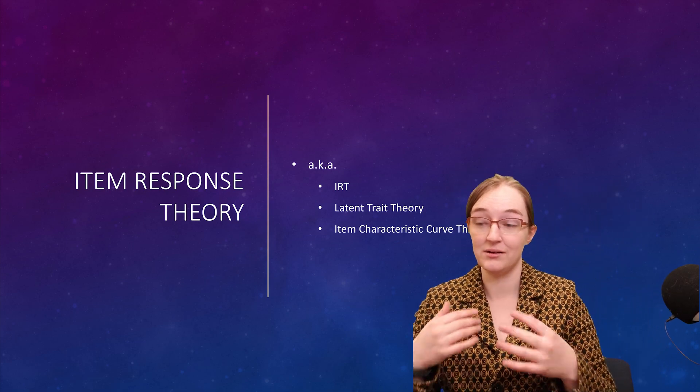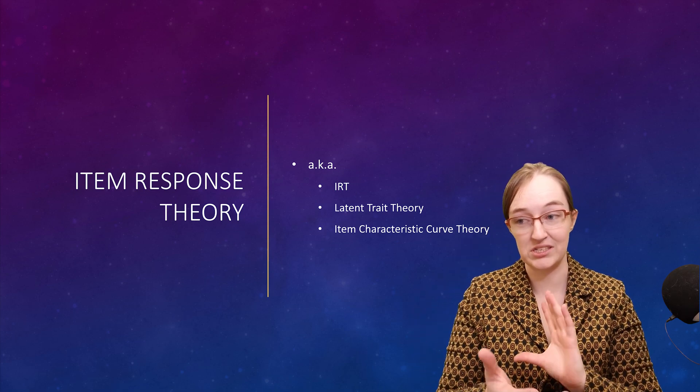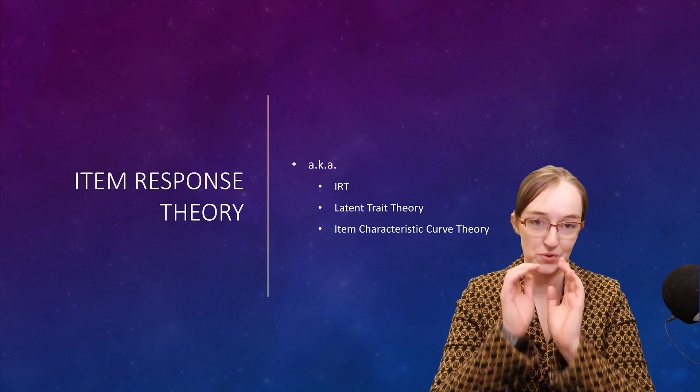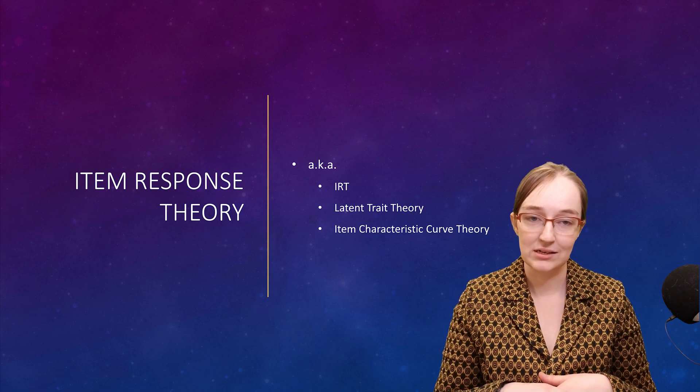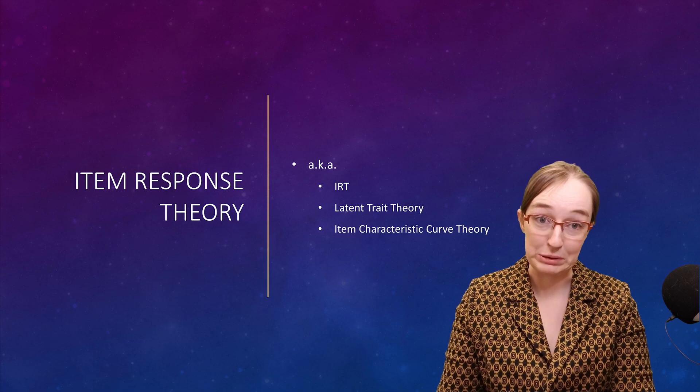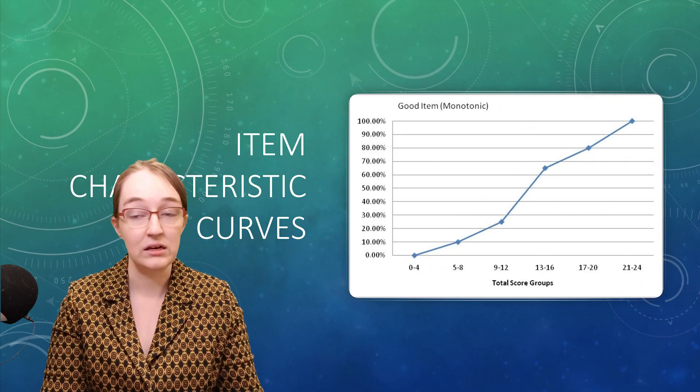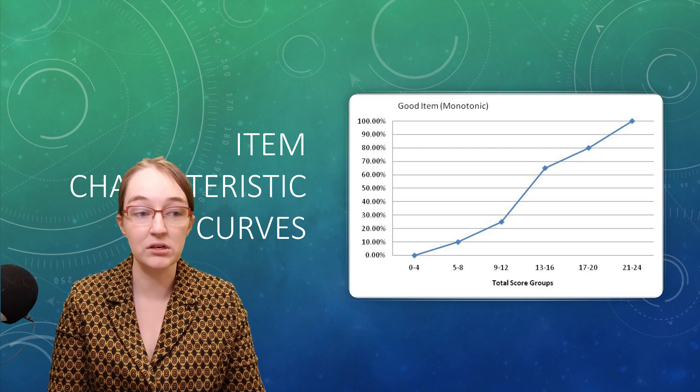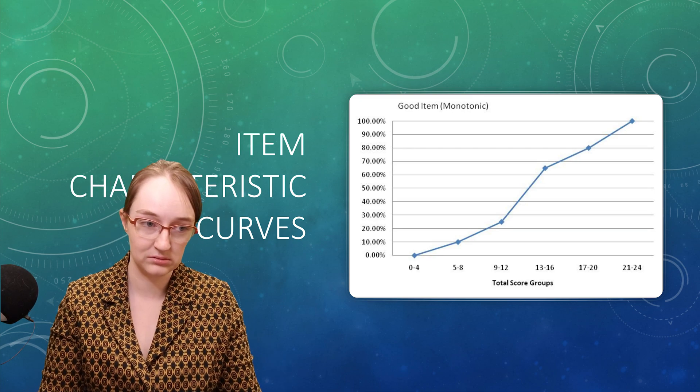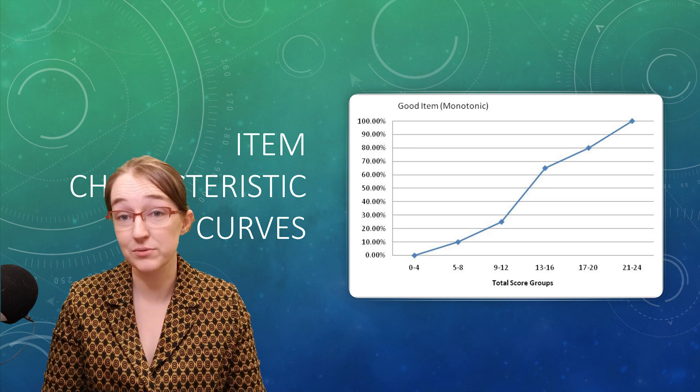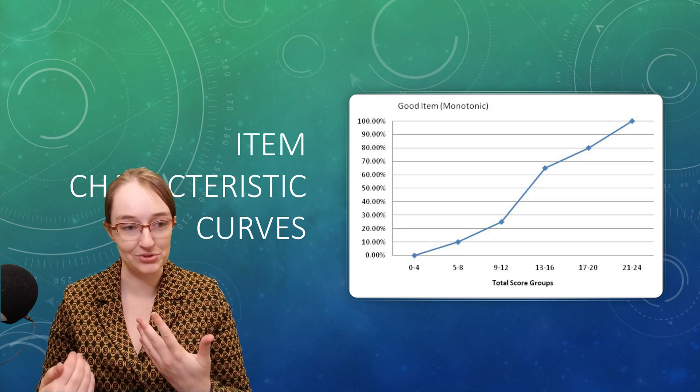But I want to kind of give us some scaffolding so that I can bridge the gap and not just throw us straight into IRT because that would be a little much. So here's the gap bridge. We're going to look at item characteristic curves. These are essentially plotting the relationship between individual items, so our individual questions, and our total score.